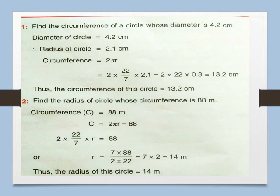Here we have to find the circumference of a circle whose diameter is given as 4.2 cm. Since the diameter is 4.2 cm, the radius is 2.1 cm. Now use the formula: circumference equals 2πr. Substituting pi as 22/7 and r as 2.1, you will get the answer as 13.2 cm. So the circumference of the circle is 13.2 cm.